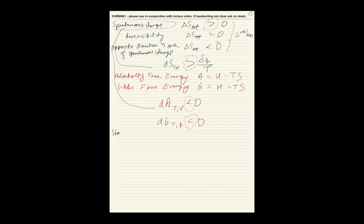We also introduced some intuition for what A and G are. We showed last time that the change in A is the maximum work obtainable from a system at constant T — and importantly, no constant volume appears in this physical interpretation. Today we will show a similar thing for G: that the change in G is the maximum non-expansion work obtainable from a system.